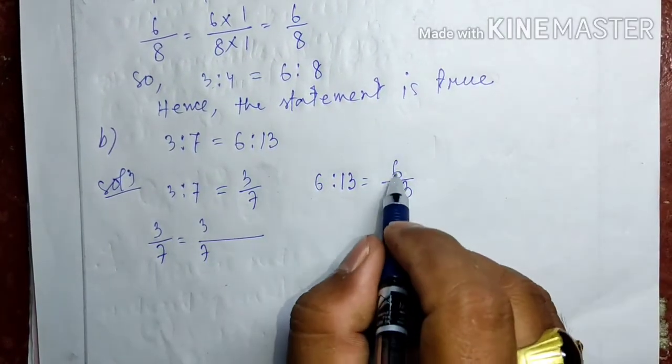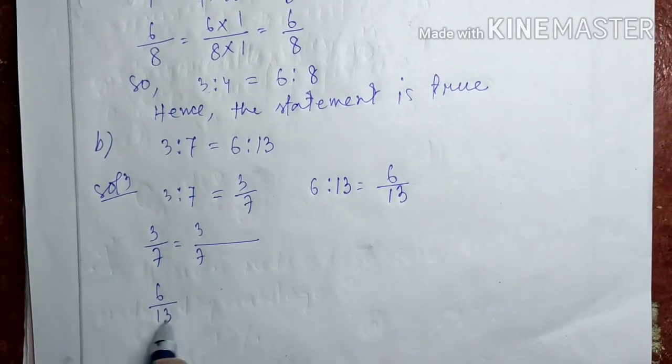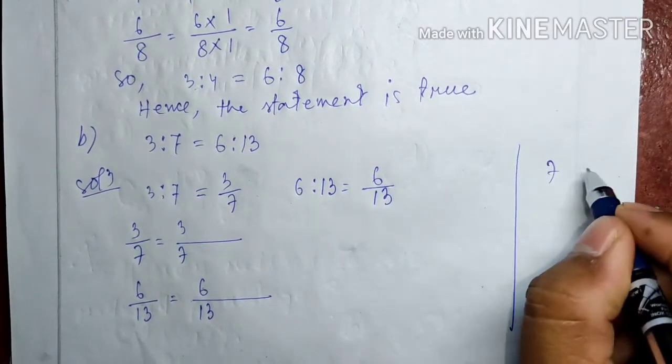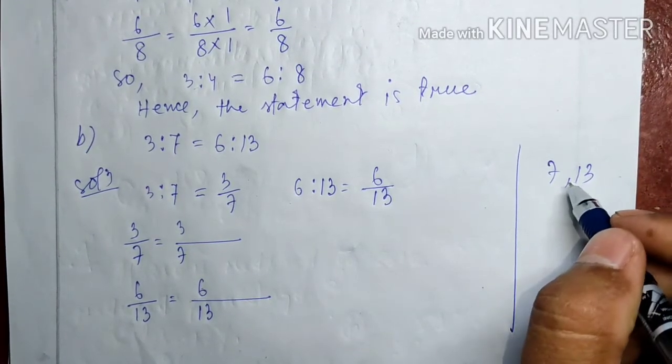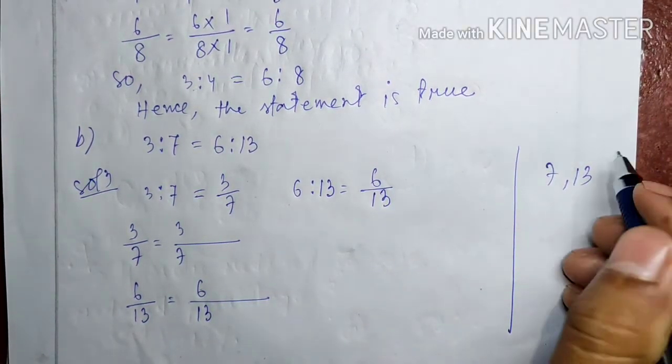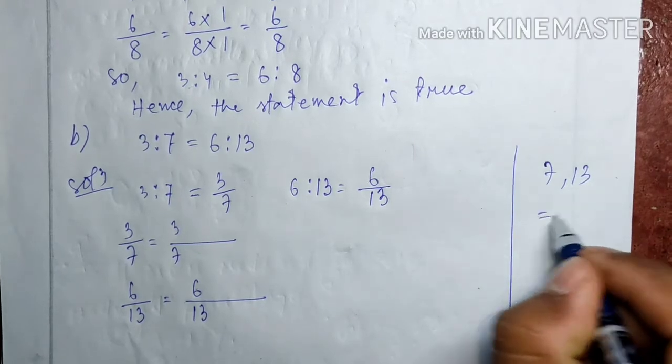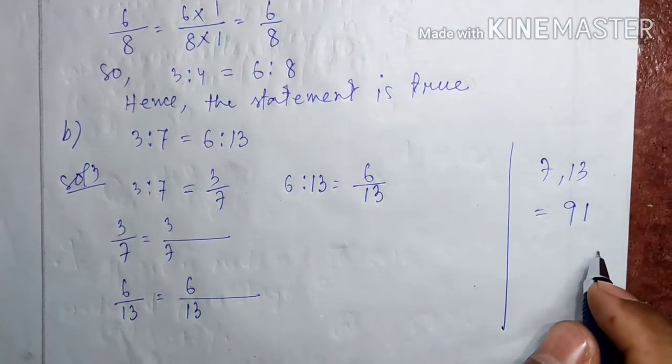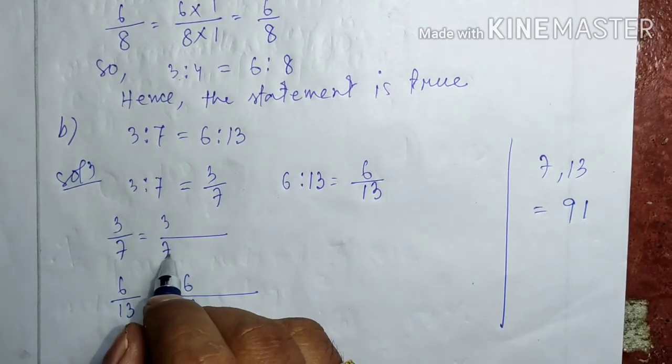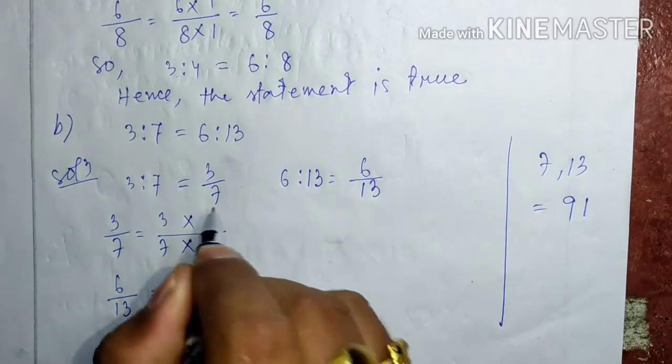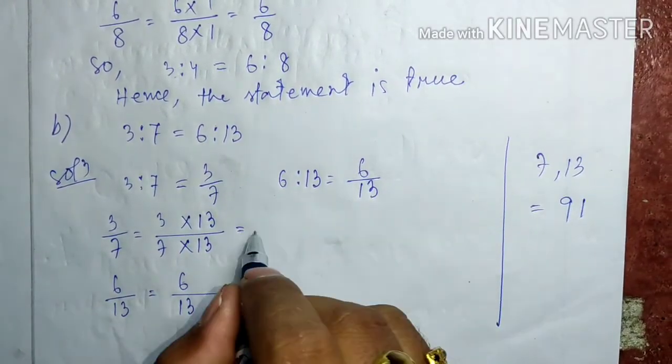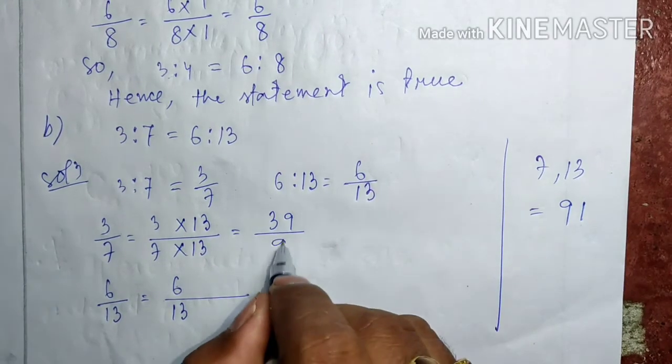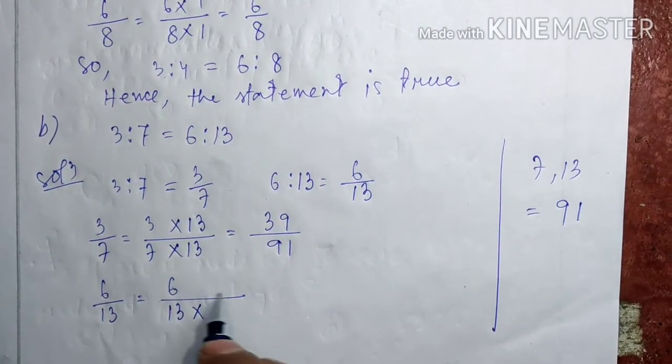3 by 7 and the second fraction, 7 and 13. The LCM is 7 times 13. There are no common factors, so we multiply directly. 7 into 13 is 91. We need to make their denominator 91. Then 7 you multiply with 13, same number multiplied at the numerator: 13 times 3 are 39, 7 into 13 is 91. This one will be 13 you multiply with 7.